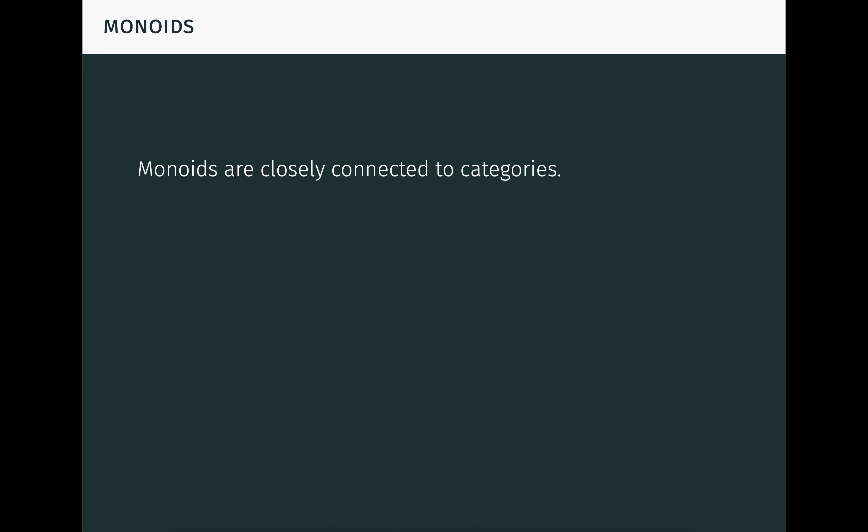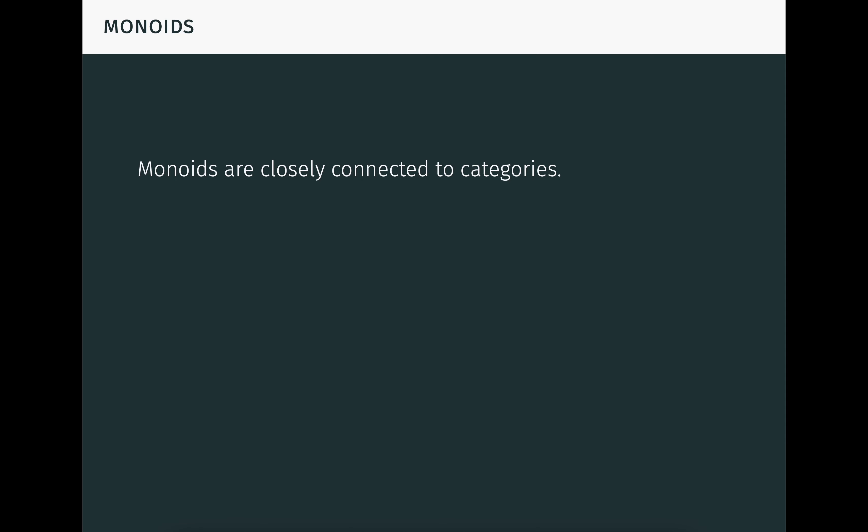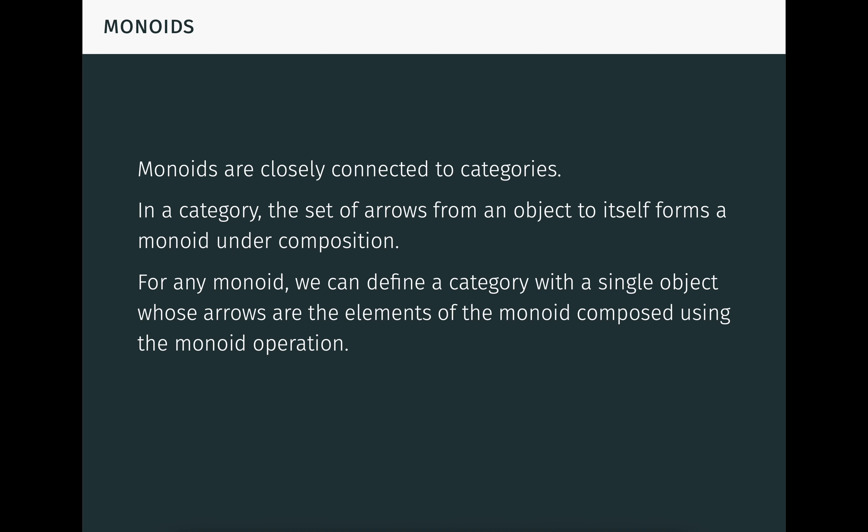Monoids are also closely connected to categories. In a category, the set of arrows from any object to itself forms a monoid under composition, provided there aren't too many arrows to form a set. Conversely, for any monoid, we can define a category with a single object whose arrows are the elements of the monoid composed using the monoid operation. In other words, a monoid is just a category with a single object. For these reasons, categories can be viewed as generalized monoids.